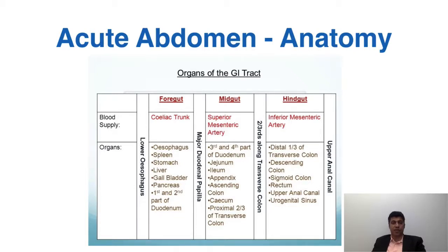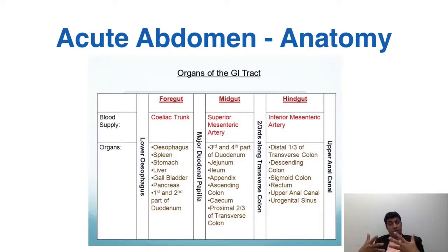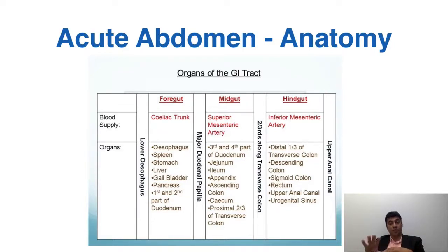The retroperitoneal first and second portions of the duodenum are derived from the foregut. The midgut blood supply evolves into the superior mesenteric arterial system, which feeds the distal duodenum (third and fourth parts), the jejunum and ileum, the cecum and appendix, the ascending colon, and about the first two-thirds of the transverse colon. The hindgut is served by the inferior mesenteric artery, covering the distal third of the transverse colon, splenic flexure, left hemicolon, sigmoid colon, and the rectum and upper anal canal.